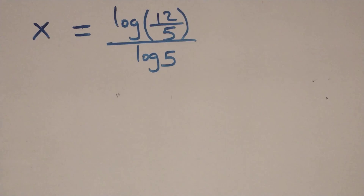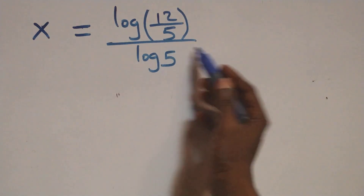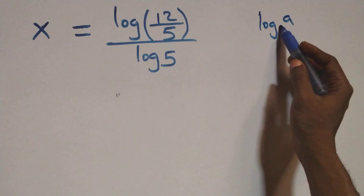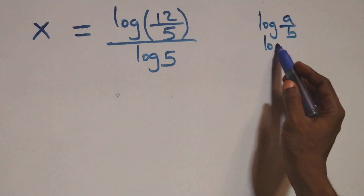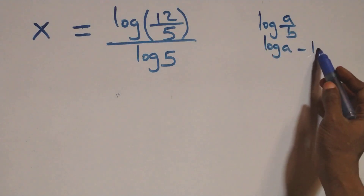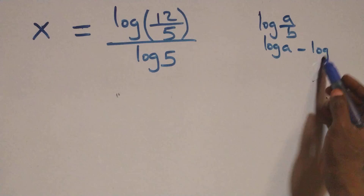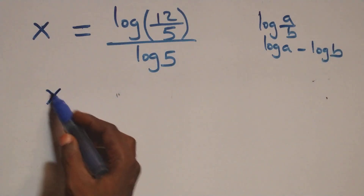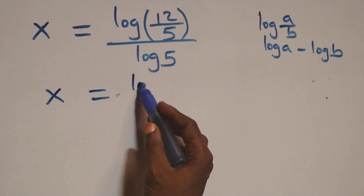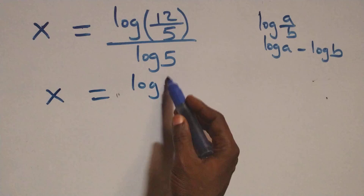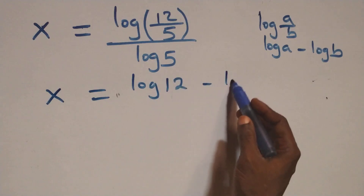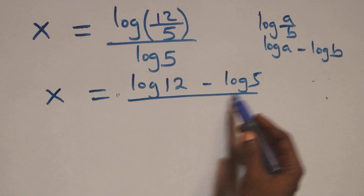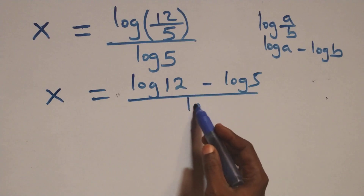This follows from the log quotient rule: log of a over b is the same thing as log a minus log b. Applying this, we can write x equals log 12 minus log 5, all over log 5.